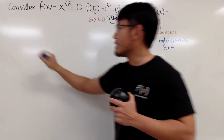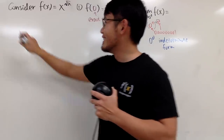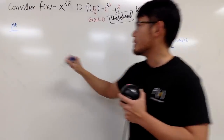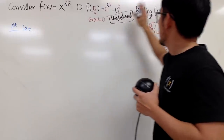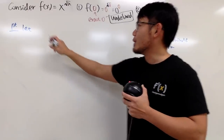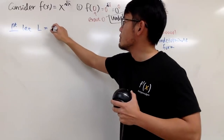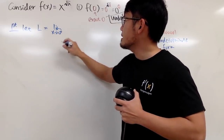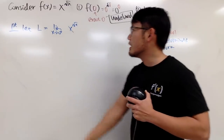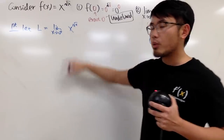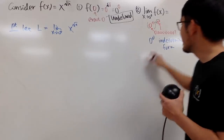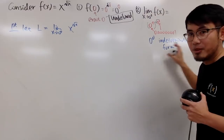So when you see 0 to the 0 in a limit equation, you have to do more work. I'll show you two ways. First way — the more natural way, especially for first-time calculus students. I will call this limit L: L equals the limit as x approaching 0 plus of x to the square root of x power. The main reason is that we have a function for the base and a function for the power, so we call it something else and take the natural log on both sides.